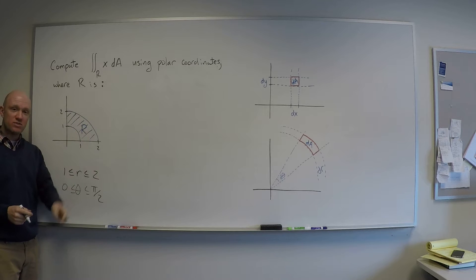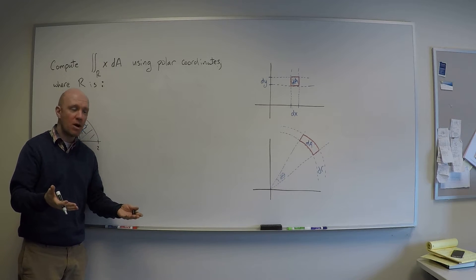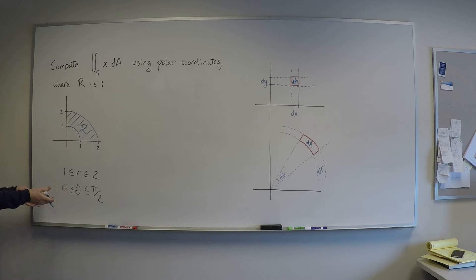So this portion of an annulus is a box in polar coordinates, a polar box. So it's a really nice region in polar coordinates.